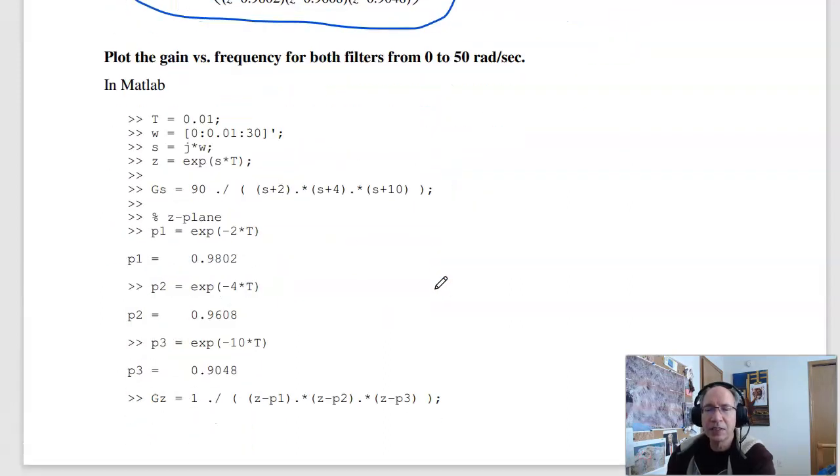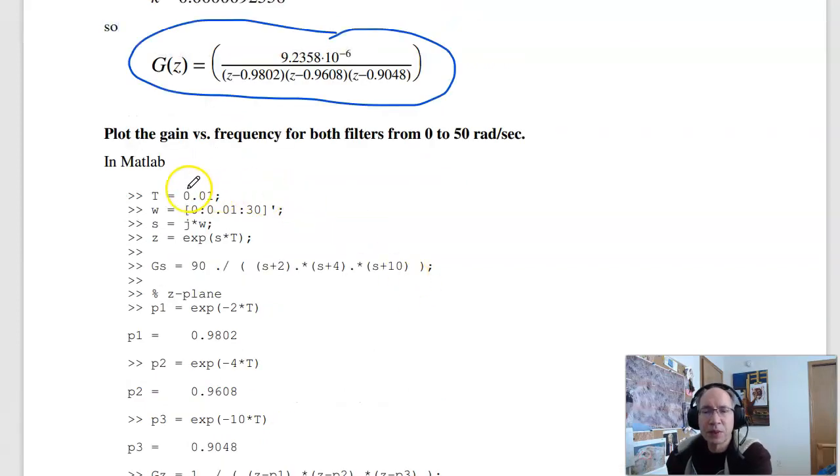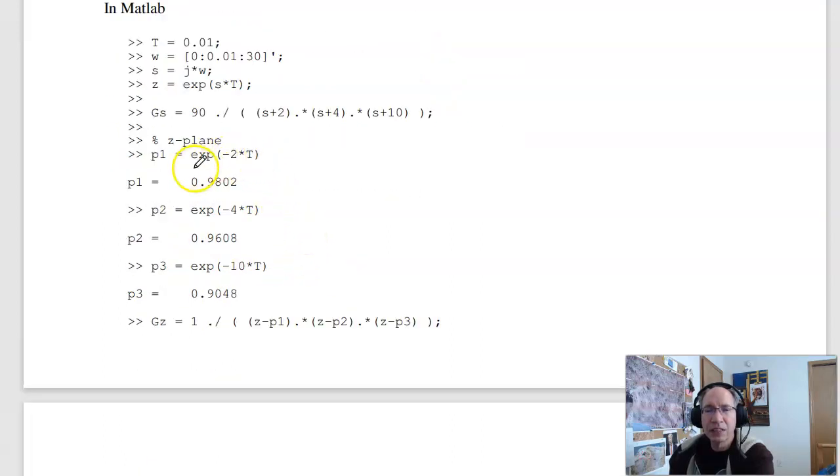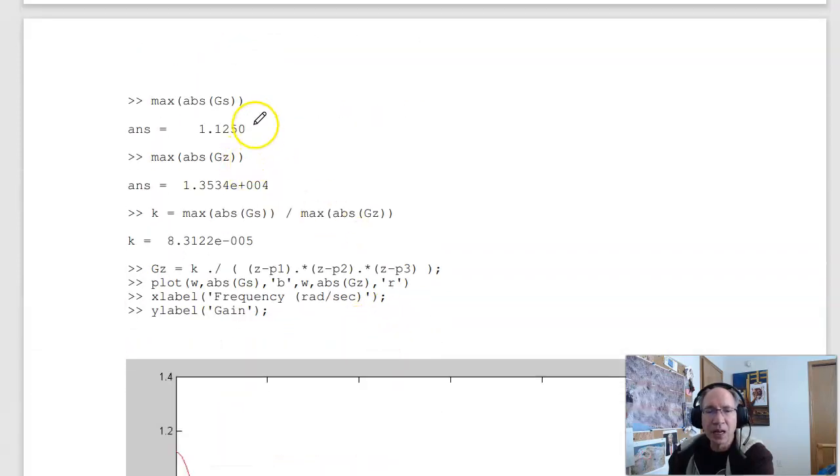To check, I could see if this is the same filter, I've got the same gain versus frequency. So what I'll do is, here's my sampling rate. Let's plot the gain versus frequency between 0 and 30 radians per second. S is j omega, z is e to the st. Here's g of s. To get g of z, here's how the poles map. The first one maps is e to the st, pole at minus four, pole at minus 10. G of z, I don't know the numerator yet. So let's just guess one. There's my denominator. The maximum gain of g of s is 1.12. Maximum gain of g of z is wrong. So k is the ratio of the two. There's my k. So once I know k, I can find g of z. And let's plot. Frequency versus gain of g of s in blue. Frequency versus g of z in red. And here's what you get.